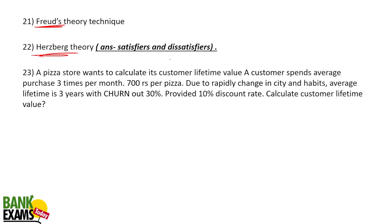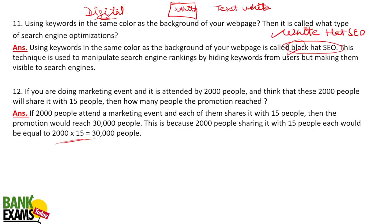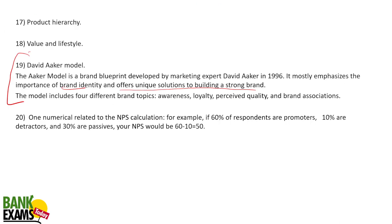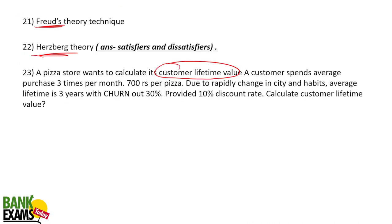A pizza store wants to calculate its Customer Lifetime Value (CLV). There are very easy questions in the exam — like the Twitter cost-per-subscriber question — but CLV calculation is a more complicated type. A customer spends an average of 700 rupees per pizza and buys three times per month. Average lifetime brand loyalty is three years with a churn rate of 30%. A 10% discount rate is provided. Calculate the CLV.